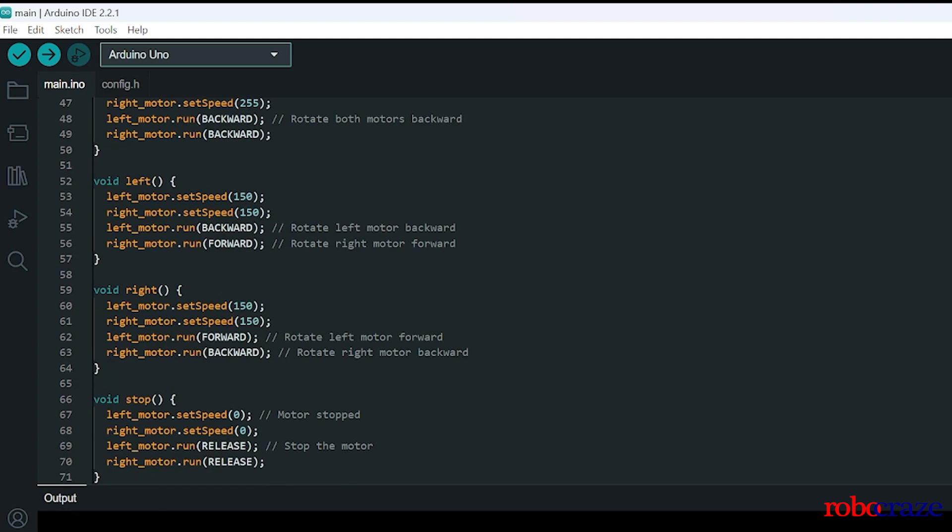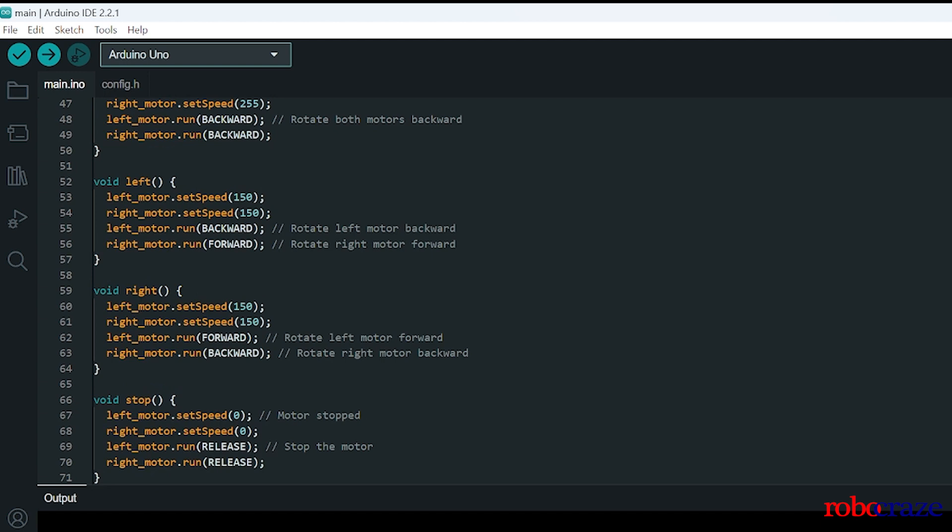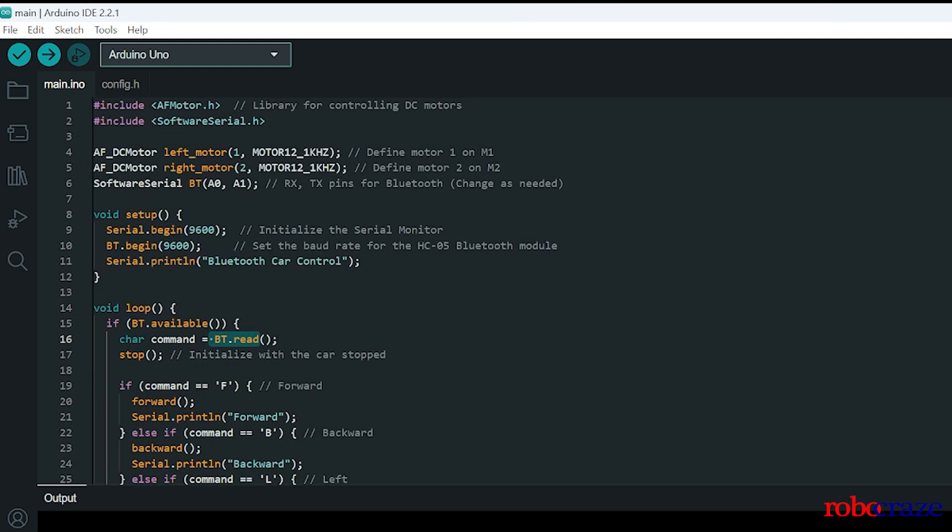As for right, the left wheel will rotate forward and the right wheel will rotate backward. As for stop function, both of them will be released, that is they will be made to be stopped. So this is about the code explanation.